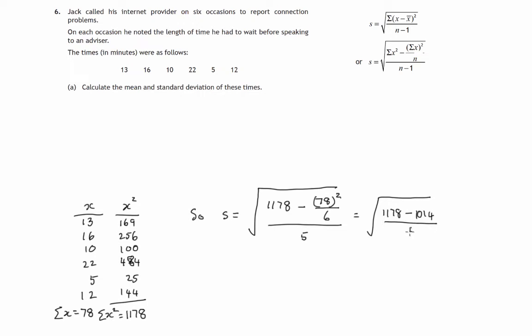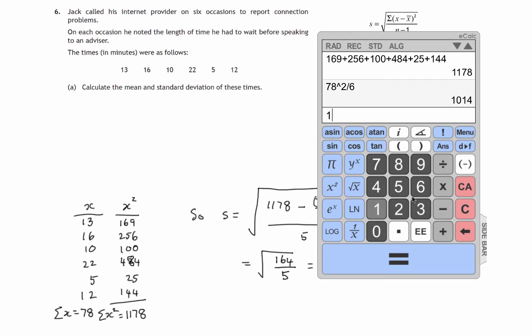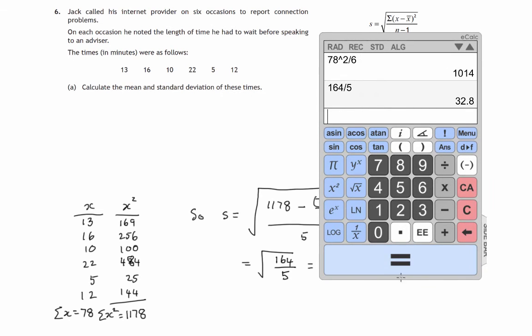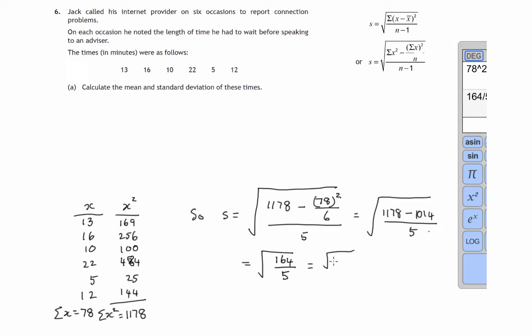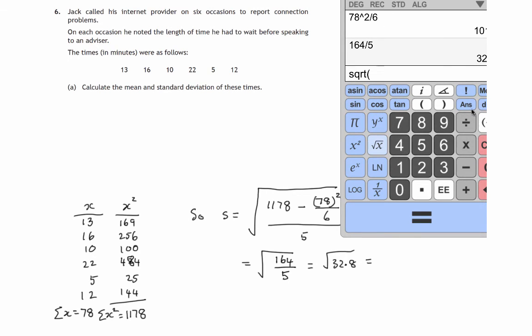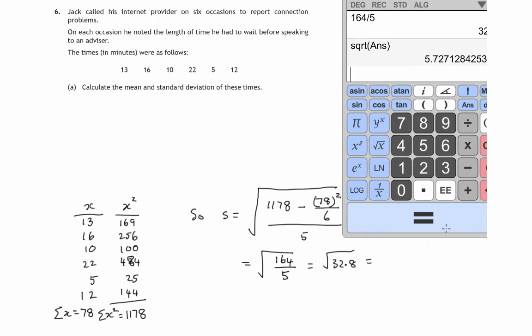And we have to divide that by 5. So 1014 from 1178 would be 164 over 5, square rooted. 164 divided by 5, that's 32.8, the square root of that answer. So there we go, 5.727 and so on.